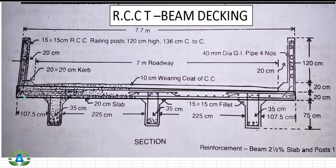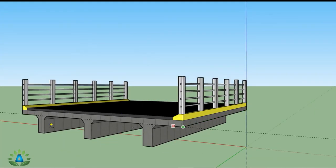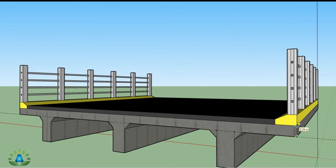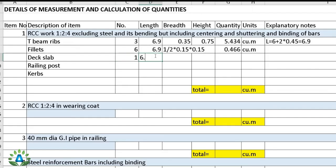Next is the deck slab — the rectangular portion covering the full width. The number is 1, length = 6.9 m, width = 7.7 m (given in the section), and height = 0.2 m. The total quantity of RCC in the deck slab is 10.626 cubic meters.